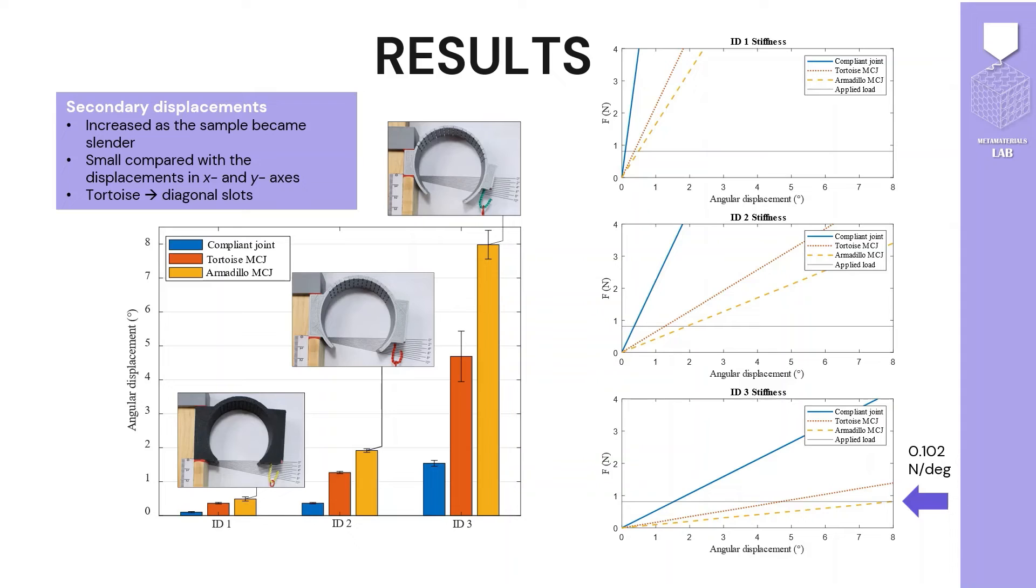The bar graph presents the obtained results at the experiments. Metacompliant joints were the ones with larger displacements, being the armadillo one the one with the largest angular displacement.